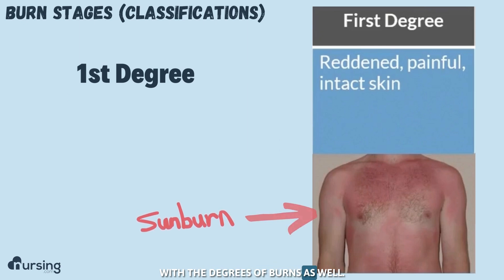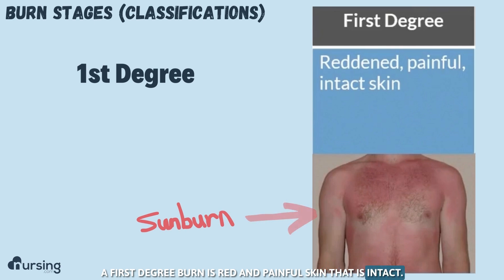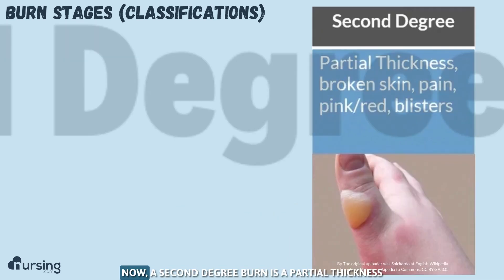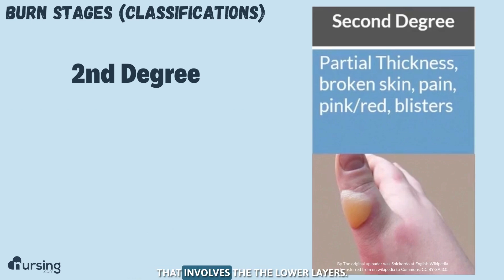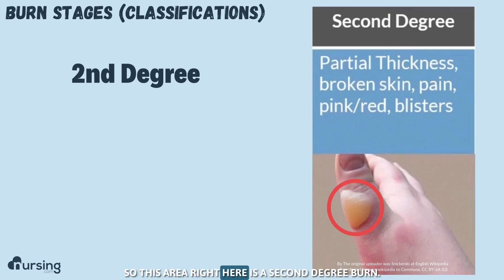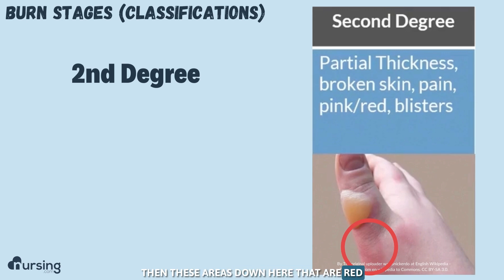Let's review the degrees of burns. A first degree burn is red and painful skin that is intact — a sunburn is a great example. A second degree burn is a partial thickness burn that goes all the way through the epidermis and starts to affect the dermis, so you'll see either broken skin or blisters. The blistered area here is a second degree burn, while the red intact areas are first degree.